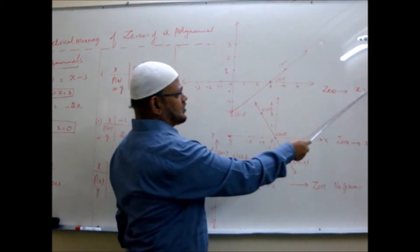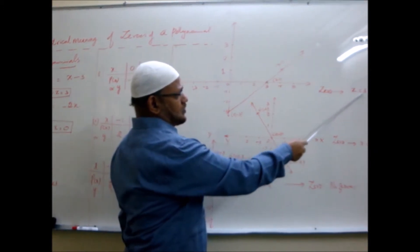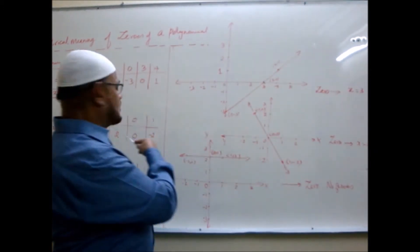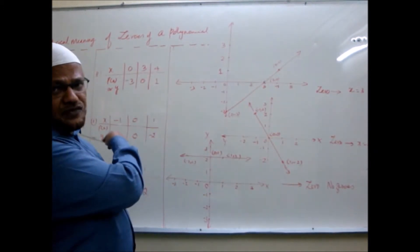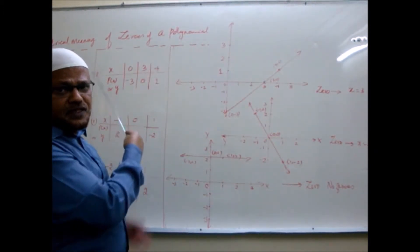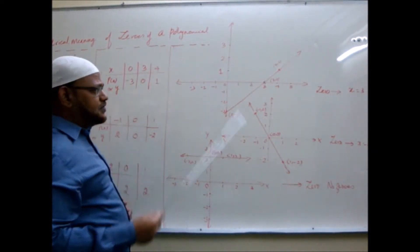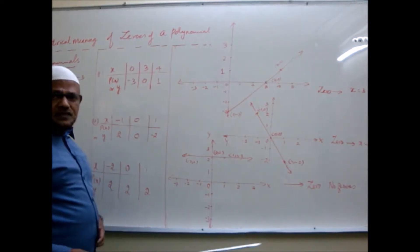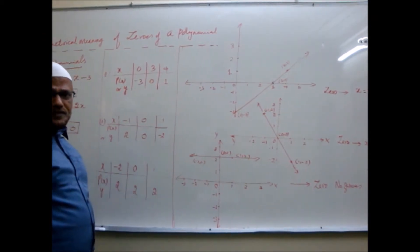How many places does a linear polynomial intersect the x-axis? A straight line will intersect the x-axis at maximum one place. Sometimes it goes parallel to the x-axis and will not intersect. So there is only one zero for a linear polynomial — the x-coordinate of the point of intersection of the graph with the x-axis represents that zero. You can verify: substitute 3 and it becomes zero.